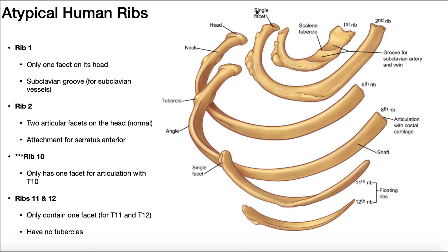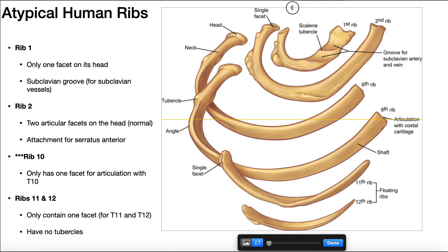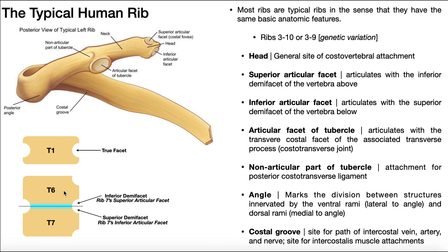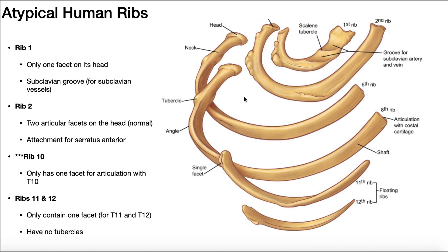What makes rib 2 atypical? It actually has the typical setup for its head — two articular facets, superior and inferior — attaching to demi-facets between T1 and T2, the same way as a typical rib. What makes rib 2 different is it has two fairly large tubercles. The one closest to the head is called the costal tubercle. The other one is the attachment for serratus anterior, the scapular protractor, which attaches on rib 2.